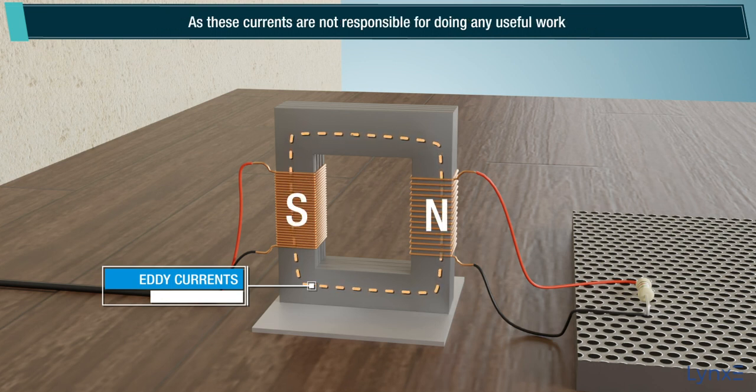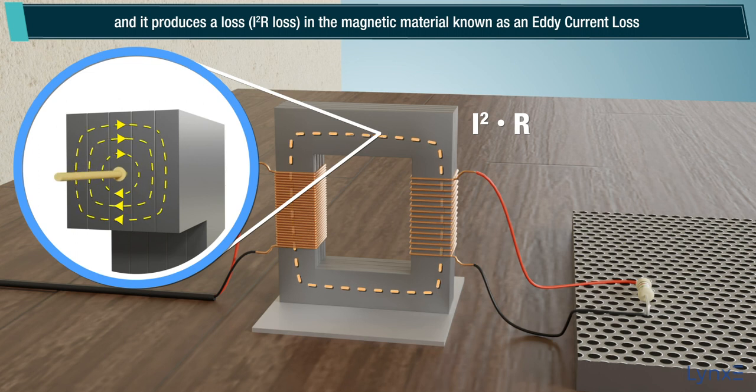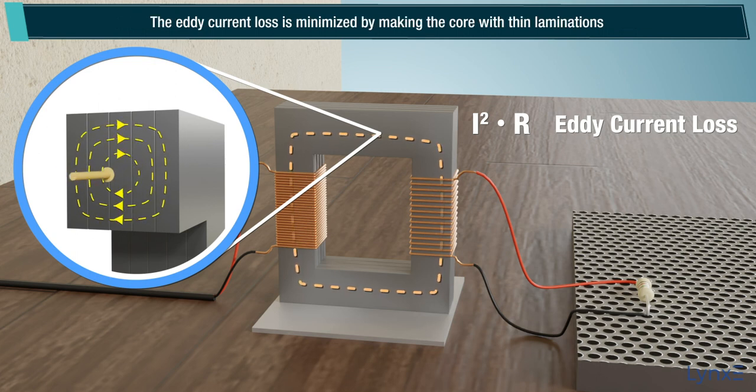As these currents are not responsible for doing any useful work, it produces a loss, I square R loss, in the magnetic material known as an eddy current loss.